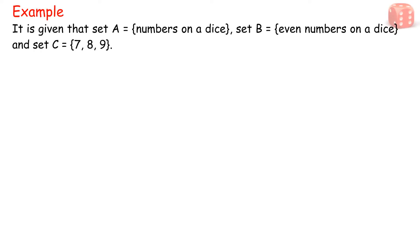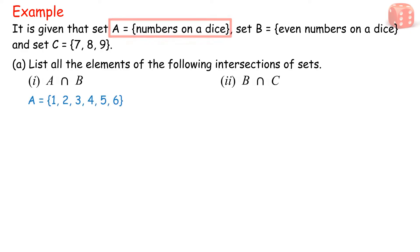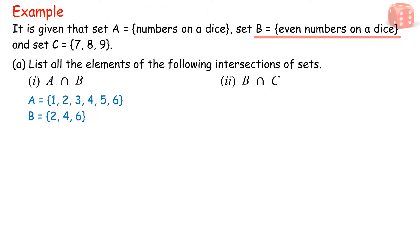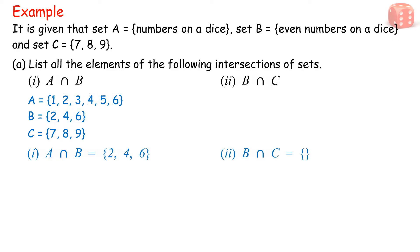Example. It is given that set A equals {numbers on a dice}, set B equals {even numbers on a dice}, and set C equals {7, 8, 9}. Part A: List all the elements of the following intersections of sets. 1. A intersect B, 2. B intersect C. Solution: A = {1, 2, 3, 4, 5, 6}, B = {2, 4, 6}, C = {7, 8, 9}. 1. A intersect B = {2, 4, 6}. 2. B intersect C = empty set.